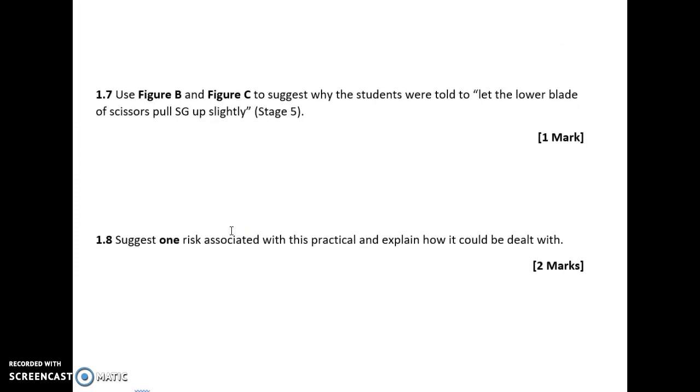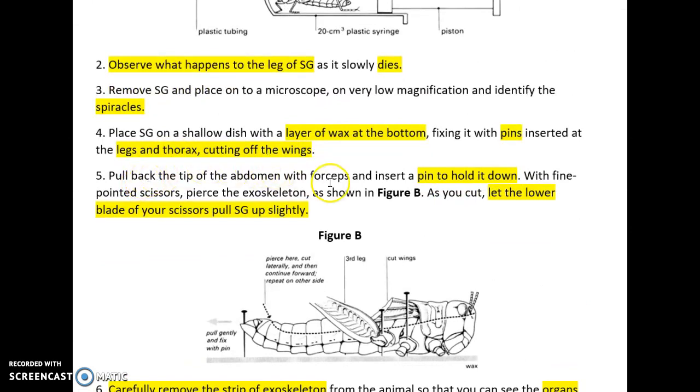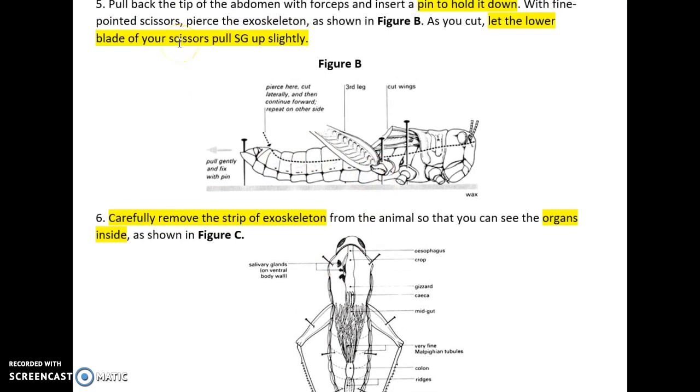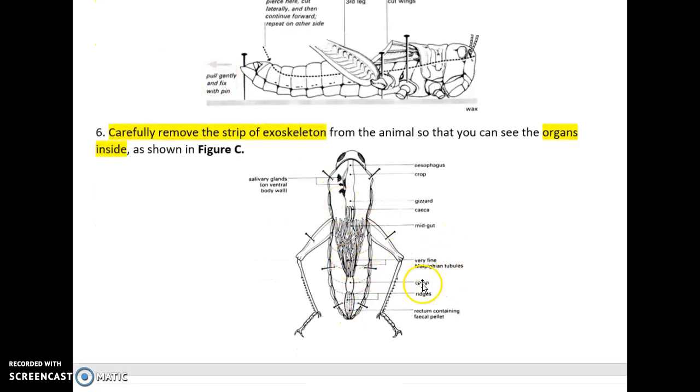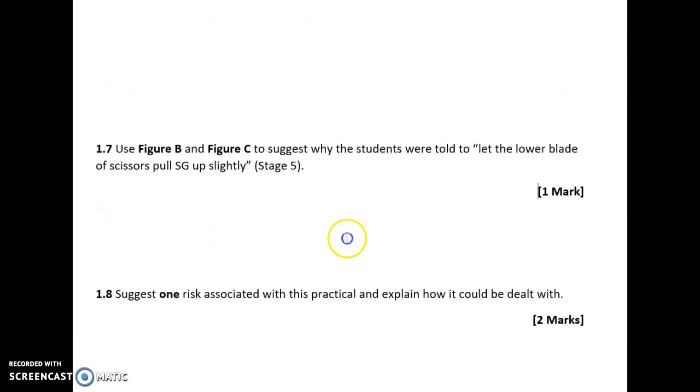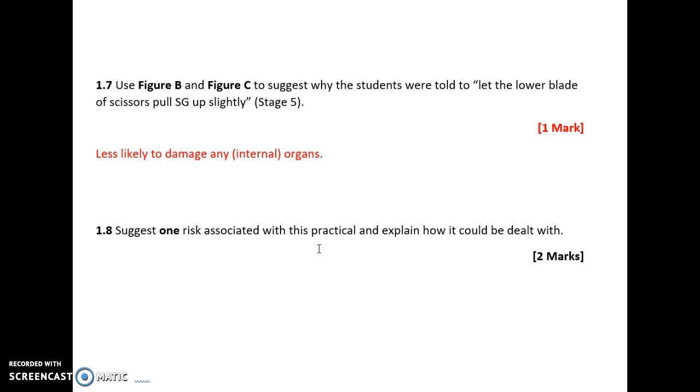The next question says to use figure B and figure C to suggest why the students were told to let the lower blade of the scissors pull SG up slightly. If we look back at stage 5, it says pierce the exoskeleton as shown in figure B. As you cut, let the lower blade of your scissors pull SG up slightly. If we're cutting here to pierce the exoskeleton and remove it, logically the organs are beneath this. By letting the lower blade of my scissors pull the insect up slightly, that will prevent any damage to these organs. Less likely to damage any internal organs, which obviously there would be no point in doing the practical to observe the organs if the organs are damaged.